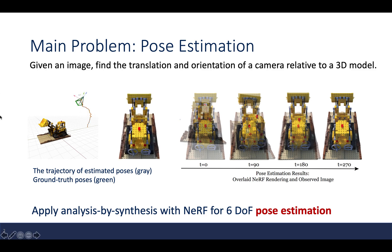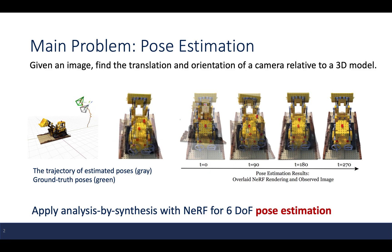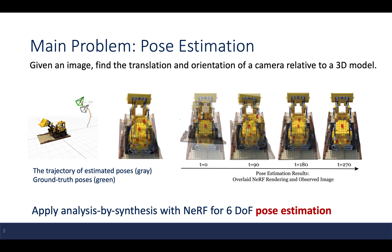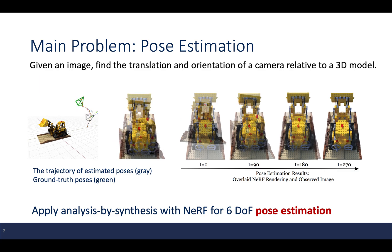The problem the paper would like to address is the pose estimation problem. Given an image, we try to find the translation and the orientation of a camera relative to a 3D model. As shown in these figures, the trajectory of the estimated poses are shown in the grey square pyramid, while the ground truth poses are shown in the green one. With training proceeding, the overlaid rendered image and the observed image will coincide.